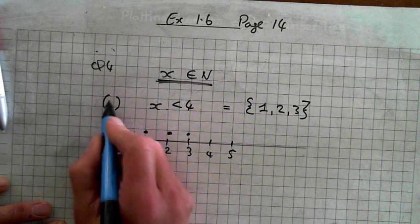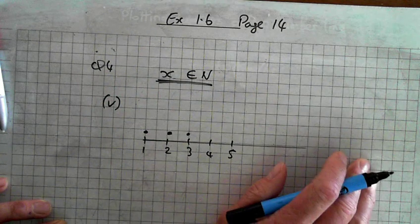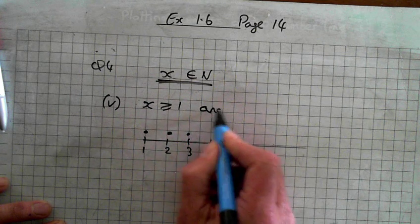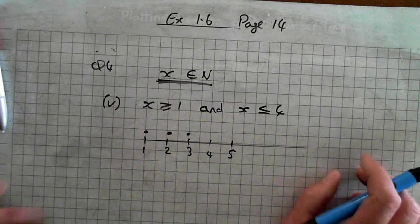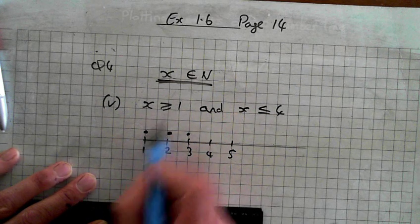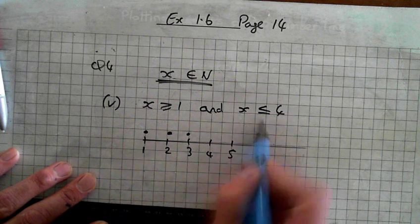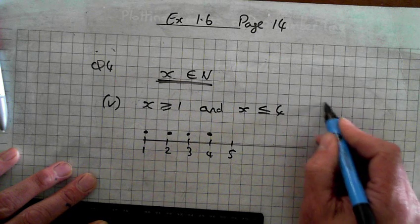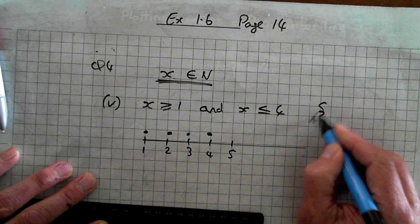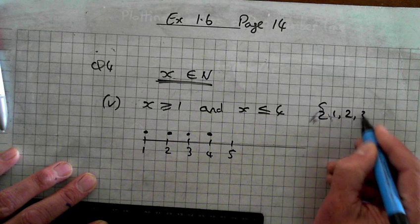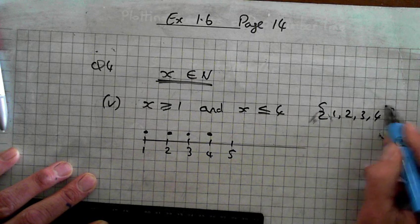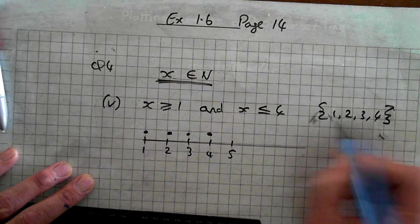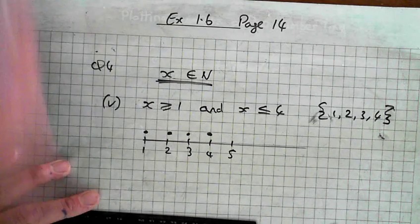And question 4, part V: X is greater than or equal to 1, and X is less than or equal to 4. So X includes 1. What are the answers? 1, 2, 3, 4 in curly brackets. So you can write the answer by drawing a number line, or by putting the answers in curly brackets. That's question 4.